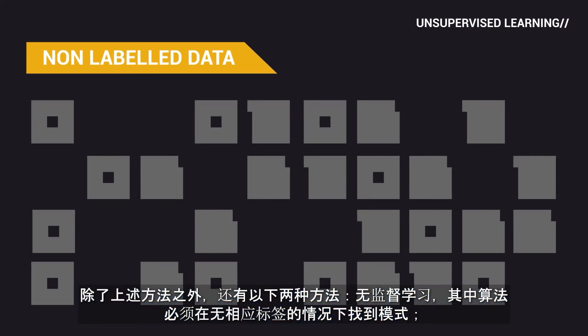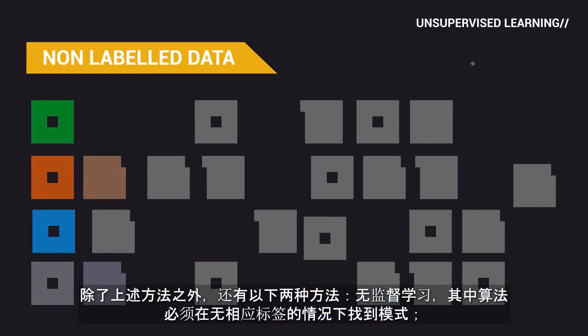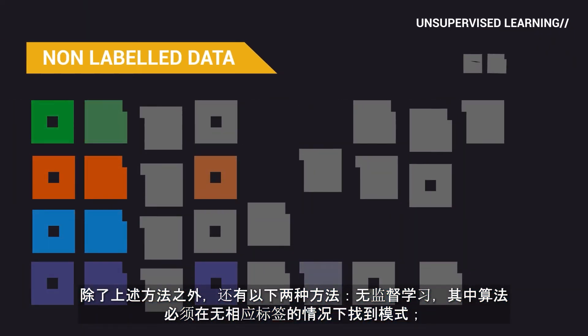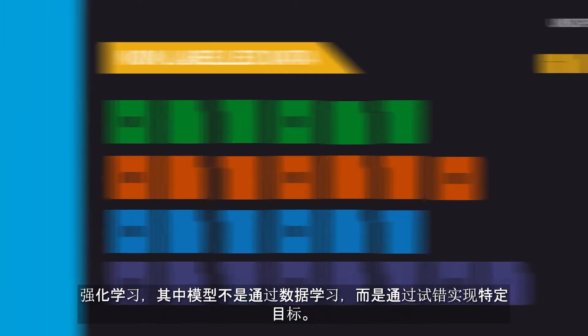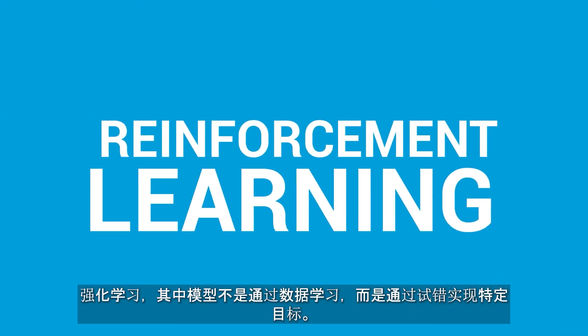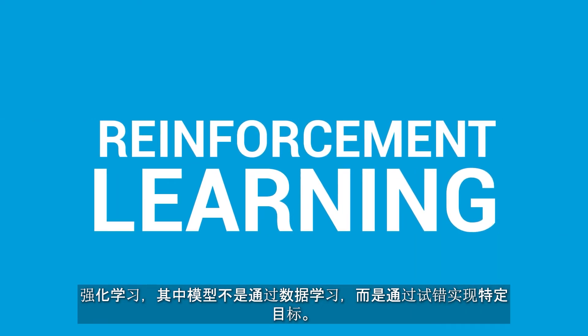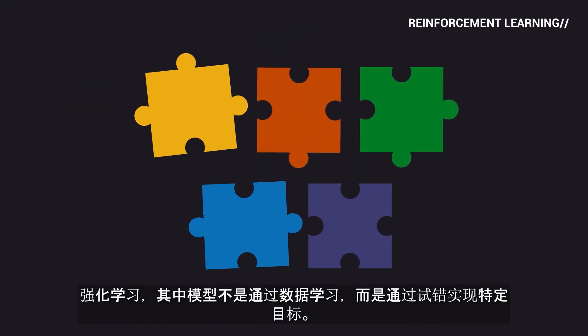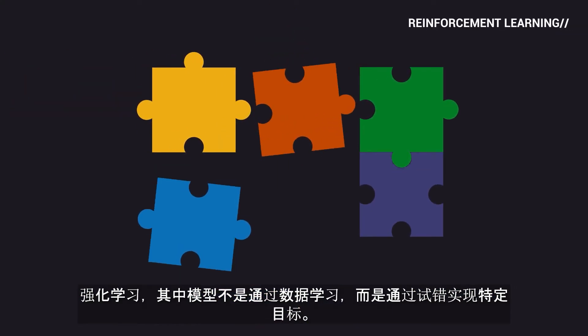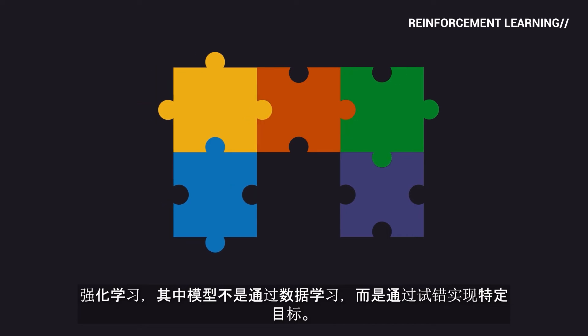Besides this method, there is unsupervised learning, where the algorithm has to find patterns without having the corresponding labels, and reinforcement learning, where the model does not learn through data but through trial and error to achieve a specific goal.